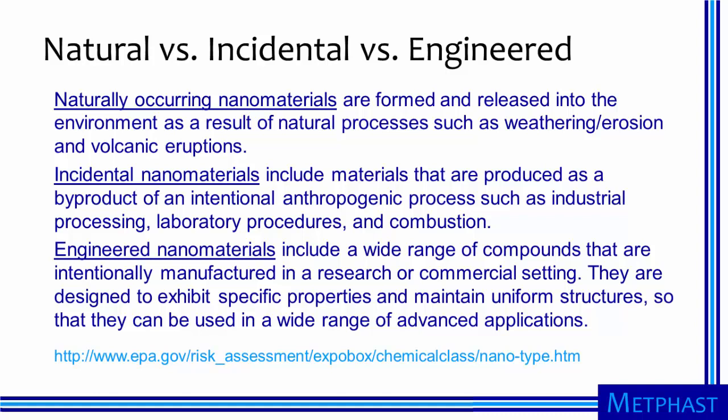The EPA uses the term engineered nanomaterials, which has become a very common term, to describe a wide range of compounds that are intentionally manufactured in a research or commercial setting. They are designed to exhibit specific properties and maintain uniform structures so that they can be used in a wide range of advanced applications. So, engineered nanomaterials are what most of us think about when we think about nanotechnology — materials that are intentionally manipulated for a purpose. However, you should keep in mind that natural materials and byproducts of human activity are sometimes also referred to as nanomaterials, especially when we talk about nanoparticles.